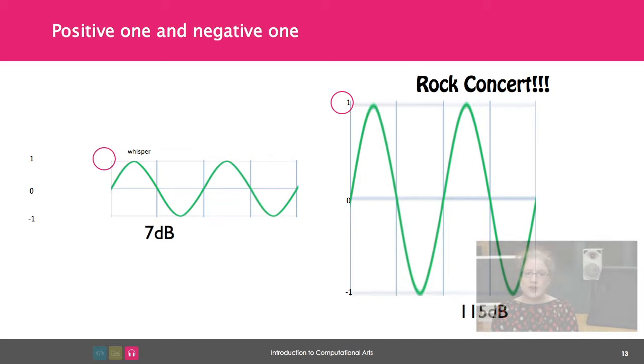If the whisper is usually five decibels but has moments where it is seven decibels, you have to set the level so that the seven decibels matches one and negative one in order to prevent the sound from clipping.